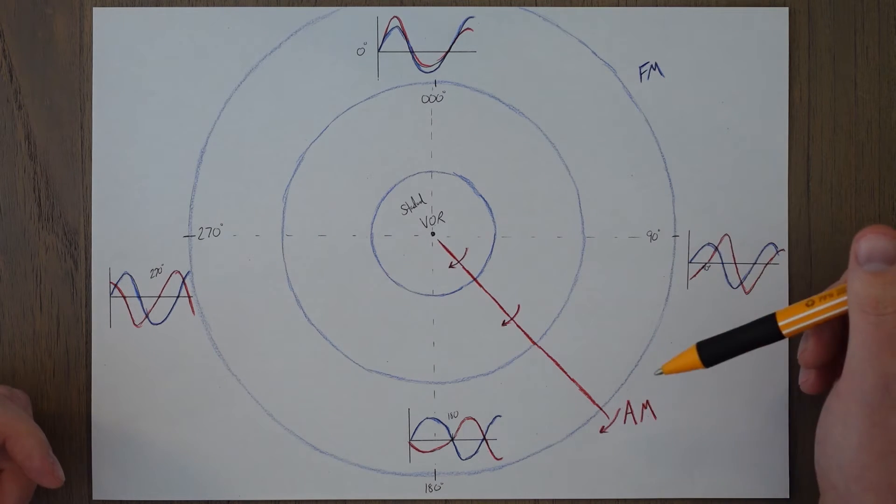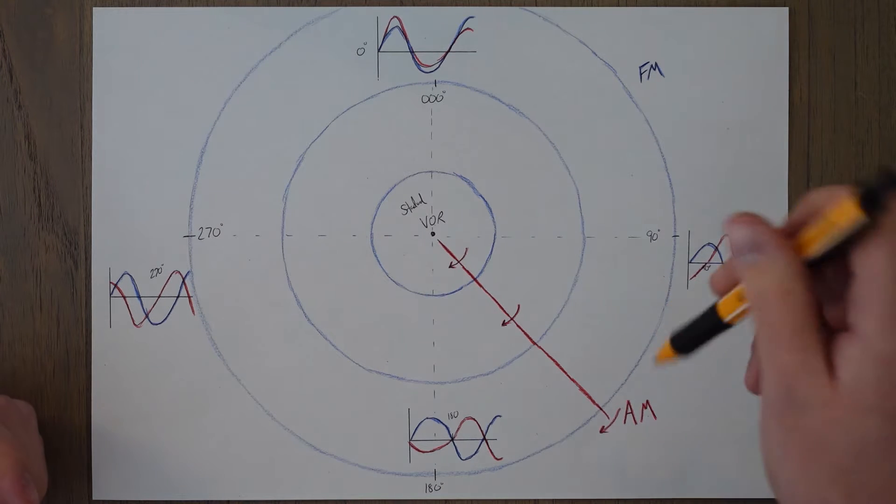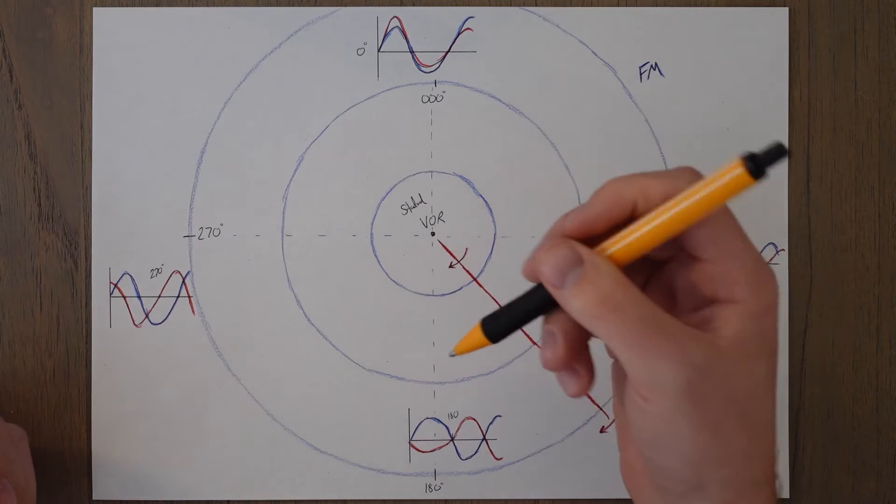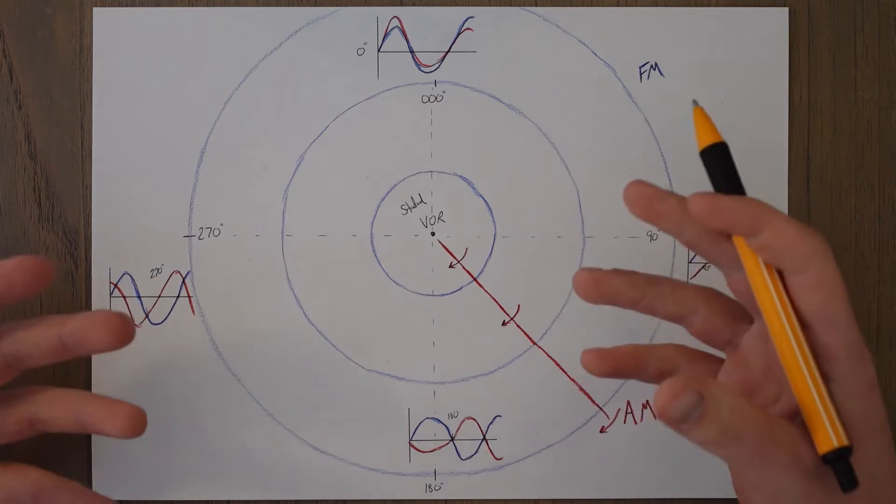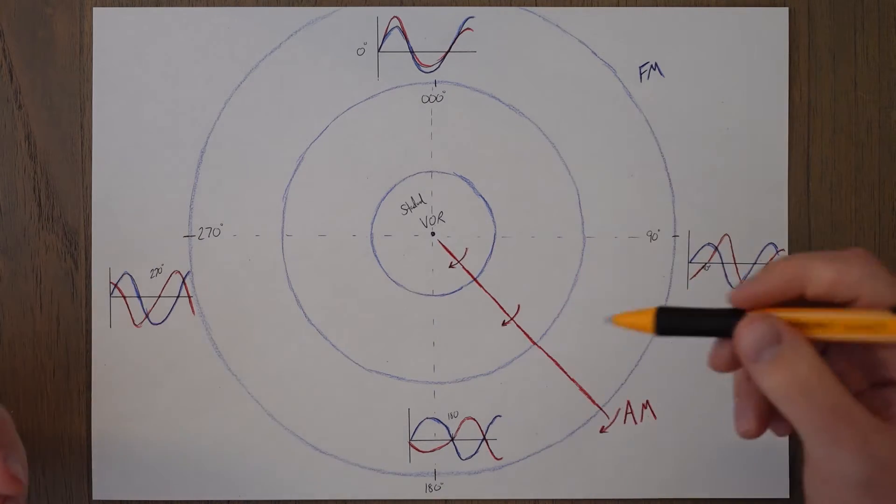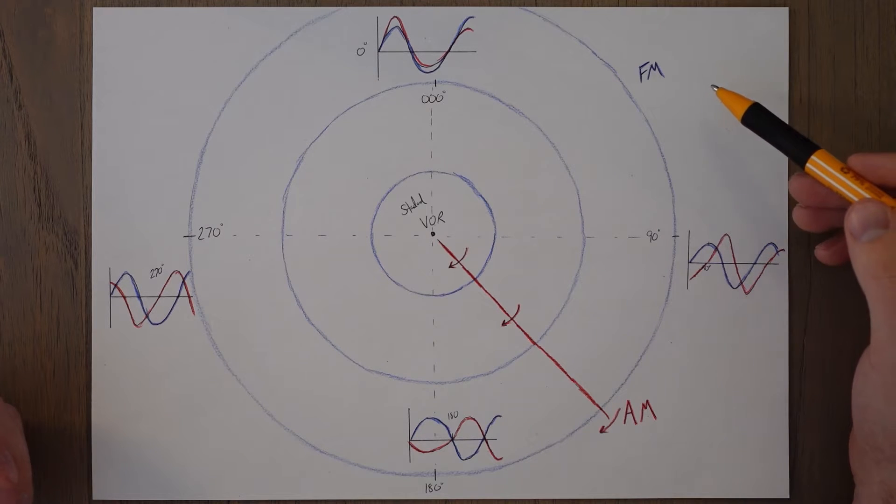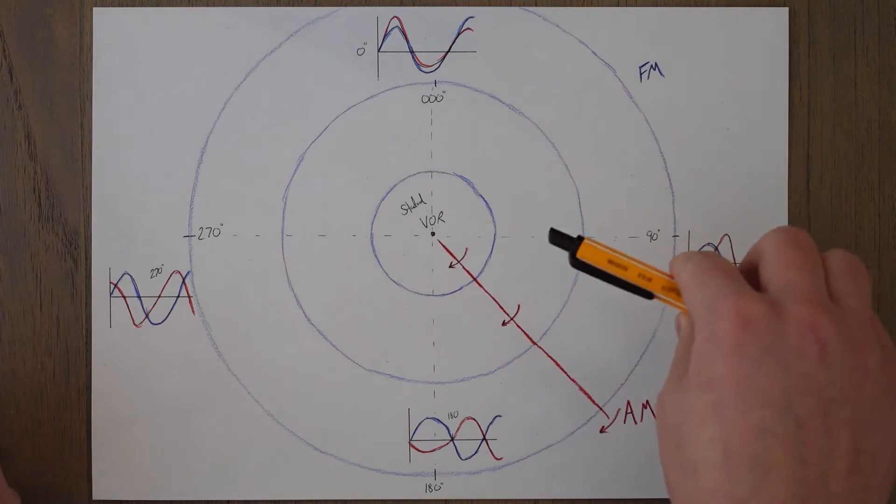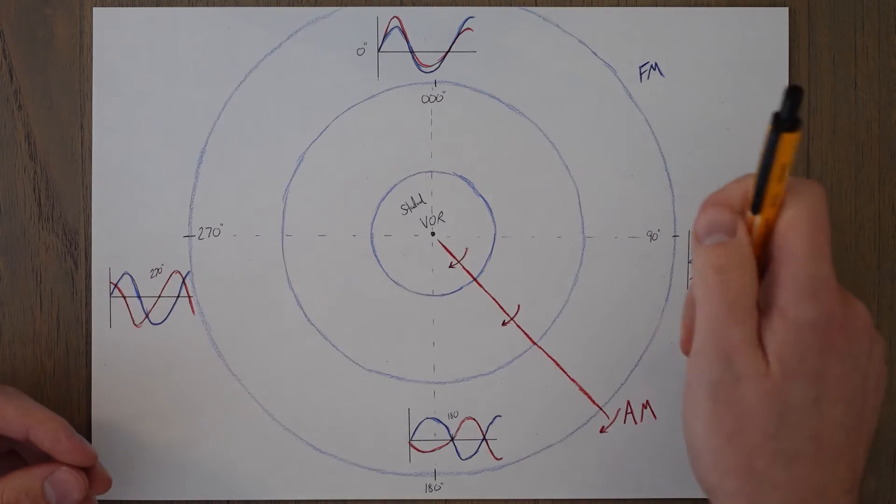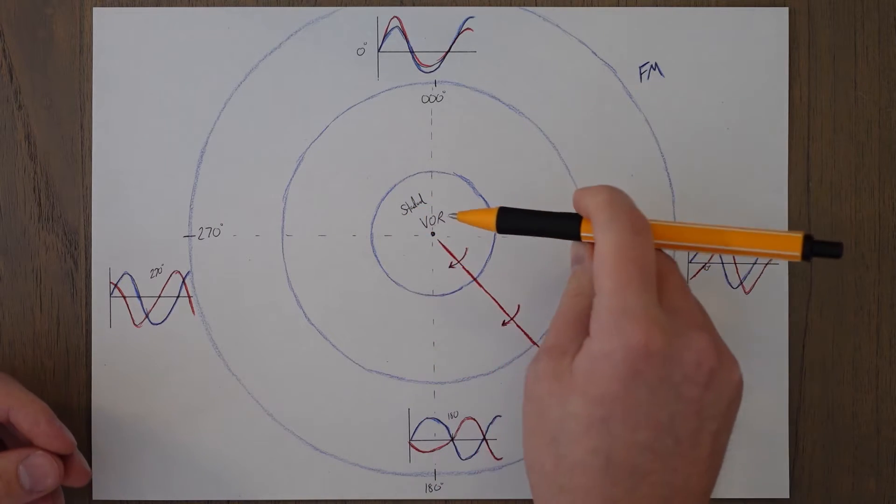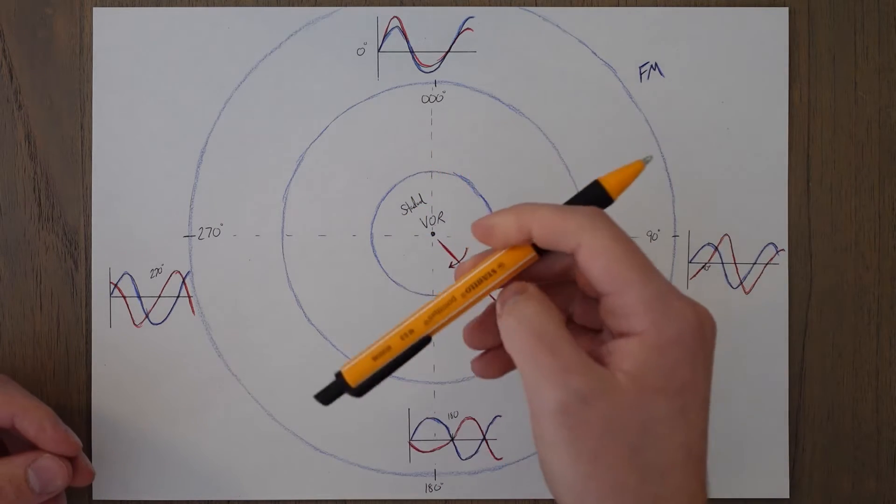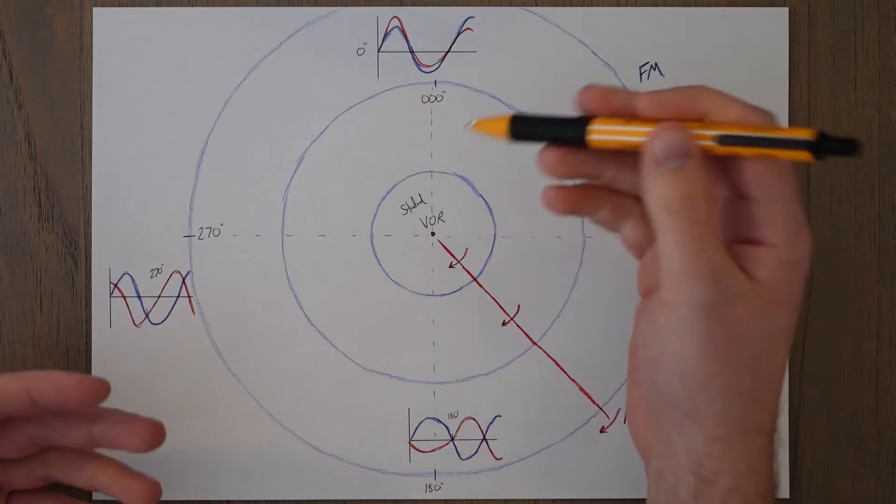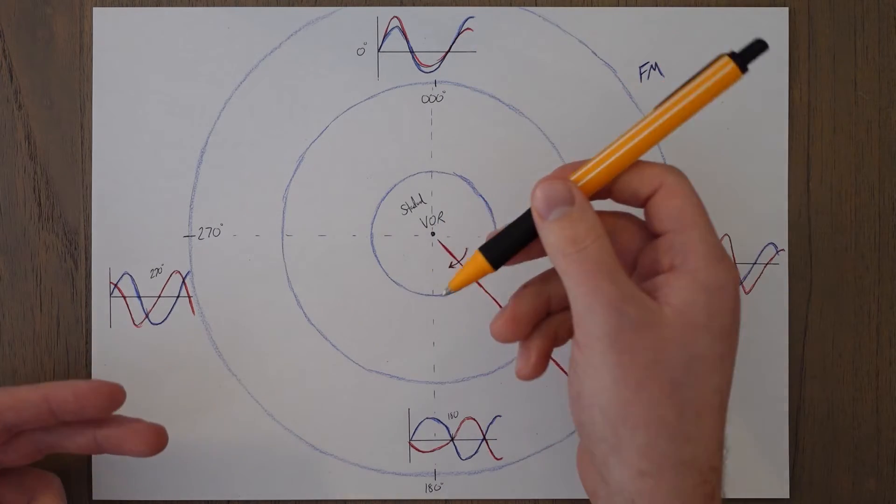The second type of signal is a rotating variable signal. This signal sweeps around 360 degrees like a lighthouse, but it does it electronically, and it also rotates at 30 times per second. But this signal is amplitude modulated, whereas the previous one was frequency modulated. The rotating AM signal is set up in such a way that as it spins, it creeps out of phase, and it does so by 90 degrees at east, 180 degrees at south, 270 degrees at west, and it's back in phase by zero. It does this proportionally by one degree of phase per degree of angle.